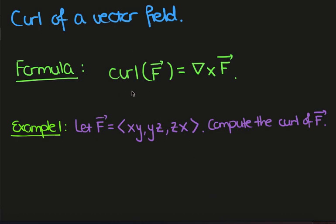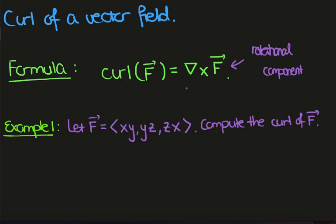Computing the curl of a vector field. Recall that the definition of the curl of a given vector field in R3 is given by the cross product of grad with the vector field. Intuitively, this measures the rotational component of the vector field. So if you imagine the vector field describing the velocity of a fluid and there's no rotational component of the fluid, then the curl of the vector field corresponding to the velocity of this flow will be zero.